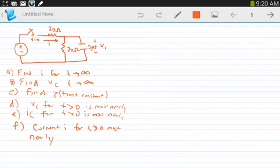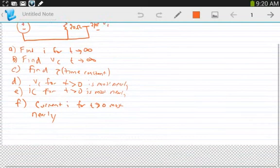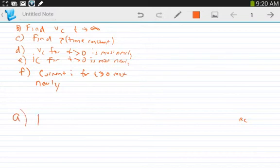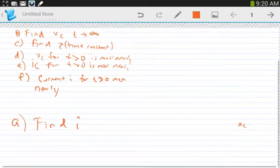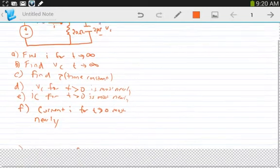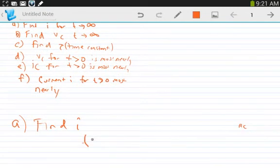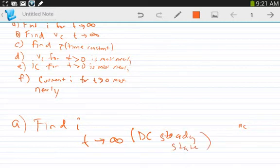Okay, we have an RC circuit with a series-parallel combination. We have six parts. The first part is finding the current I as it approaches infinity. As T approaches infinity, it's basically DC steady state.